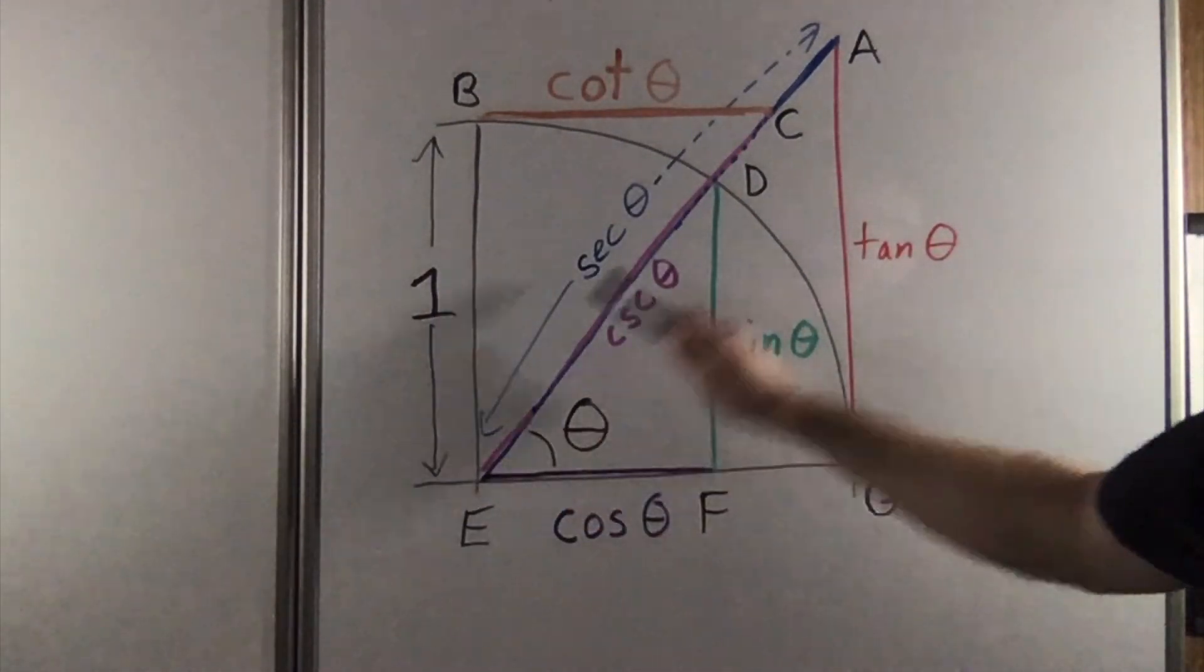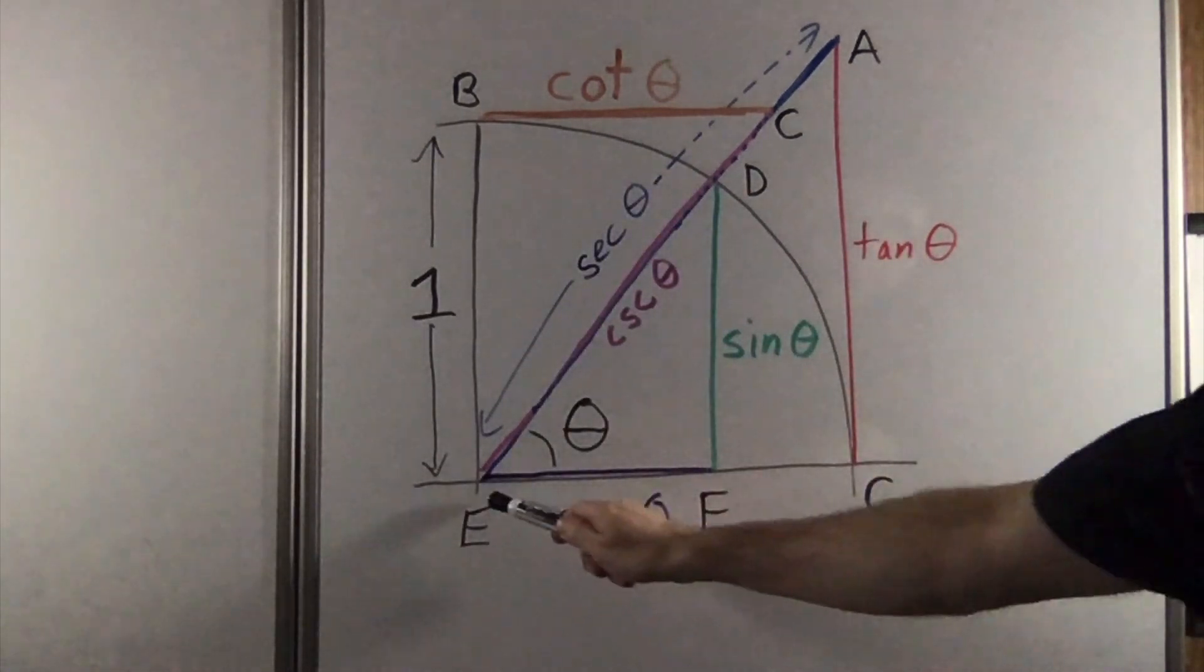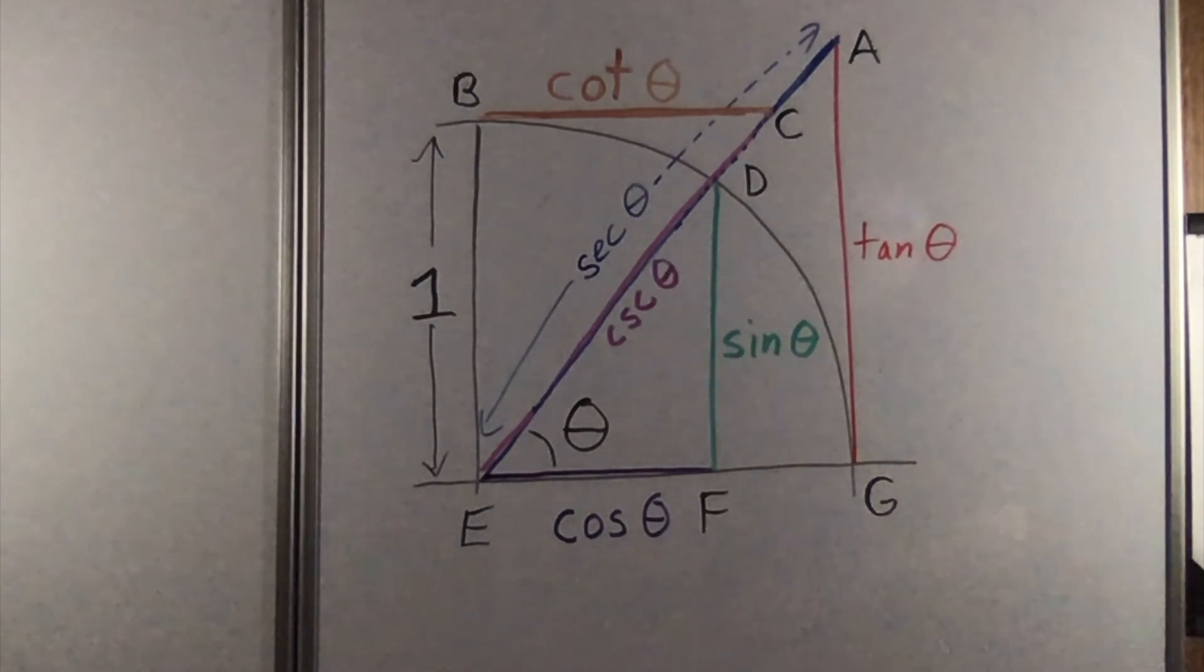Finally, if you just go from E to D, the hypotenuse is 1, the vertical is sine, and the horizontal, EF, is cosine theta.